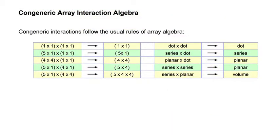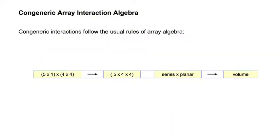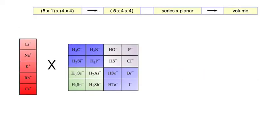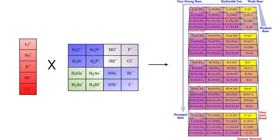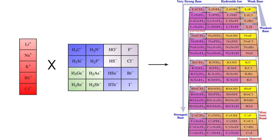If we take a 5×1 series times a 4×4 planar, we get a 5×4×4 volume — a congeneric series times a congeneric planar gives a congeneric volume. We see this with a remarkable set of species showing regular behaviour: in this congeneric volume, lithium iodide is the weakest base, lithium fluoride is a weak base, methyl lithium is a very strong base, and we may predict that methyl cesium will be the strongest base of all. Cesium iodide is the densest material, and so on.